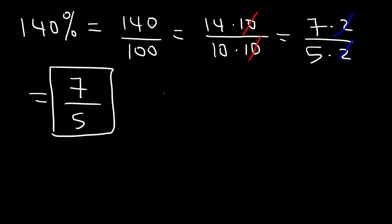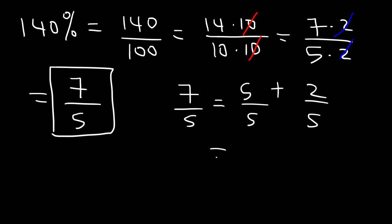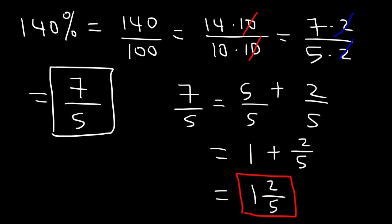Now we can convert this into a mixed number. 7 is basically 5 plus 2. Let's keep the denominator the same — 5 divided by 5 is 1, so we have 1 plus 2 fifths, which as a mixed number is 1 and 2 fifths. You could use long division to convert an improper fraction to a mixed number, but sometimes you may need to report your answer as an improper fraction, and other times as a mixed number. So we're going to do it both ways.